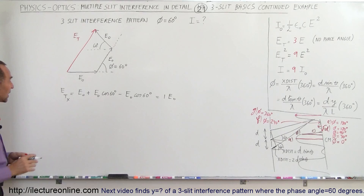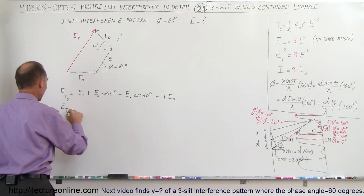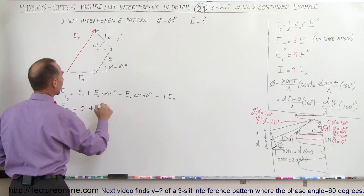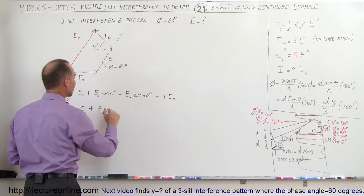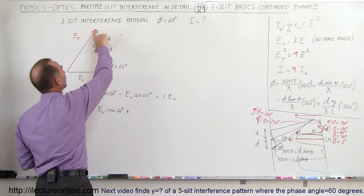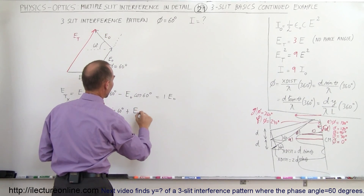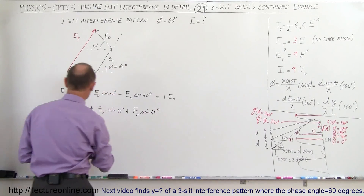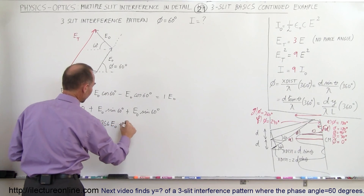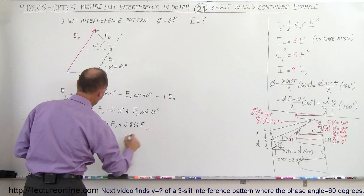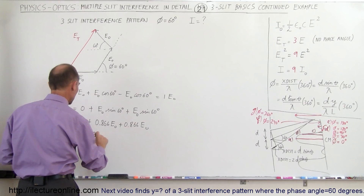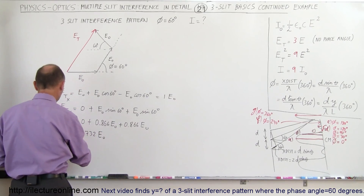Next we want to find the y component. E total in the y direction equals zero for the first phasor, plus E sub-naught times the sine of 60 degrees for the second, plus E sub-naught times the sine of 60 degrees for the third. So that's equal to zero plus 0.866 E sub-naught plus 0.866 E sub-naught, which gives 1.732 E sub-naught for the y component.